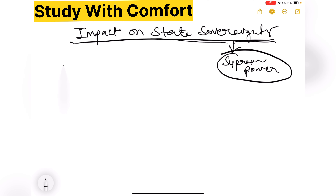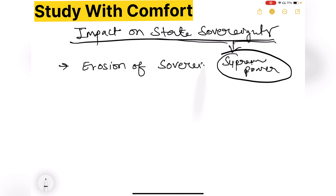कुछ scholars का मानना है कि transnational actors erosion of nation sovereignty करते हैं — मतलब state की sovereignty को erode, कम करते हैं। ये traditional state sovereignty को challenge करते हैं through cross border activities, advocacy networks, policy influence activities, protest, और mass mobilization campaigns के ज़रिए।